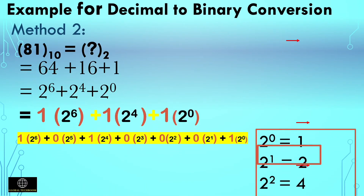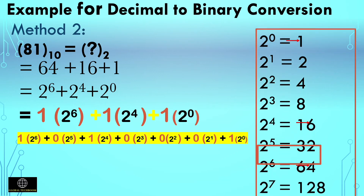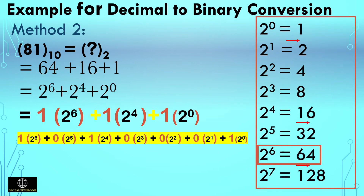In the powers-of-2 equivalent method for decimal to binary conversion, you need to find out which powers of 2 are needed to make up the given decimal number. Let's start by writing the powers of 2: 2 to the 0 is 1, 2 to the 1st is 2, 2 squared is 4, 2 to the 3rd is 8, and so on. In this example, we find the binary equivalent of 81. The highest power of 2 less than 81 is 64, which is 2 to the power 6.